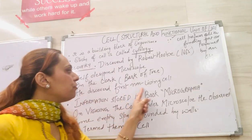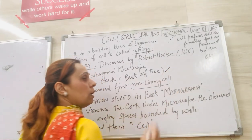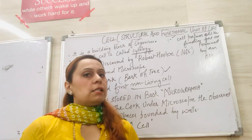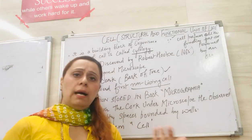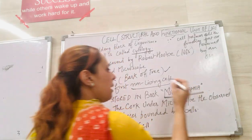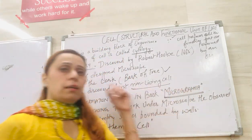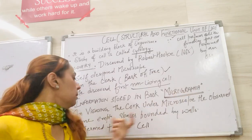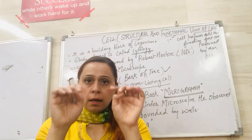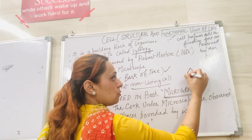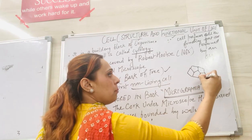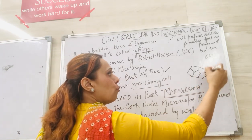He discovered the first non-living cell, because the bark of the tree is dead tissue, so he saw non-living cells there. A non-living cell has no cytoplasm or nucleus. The information about this discovery was stored in the book 'Micrographia.' On viewing the cork under the microscope, he observed that the cells were like a honeycomb structure.